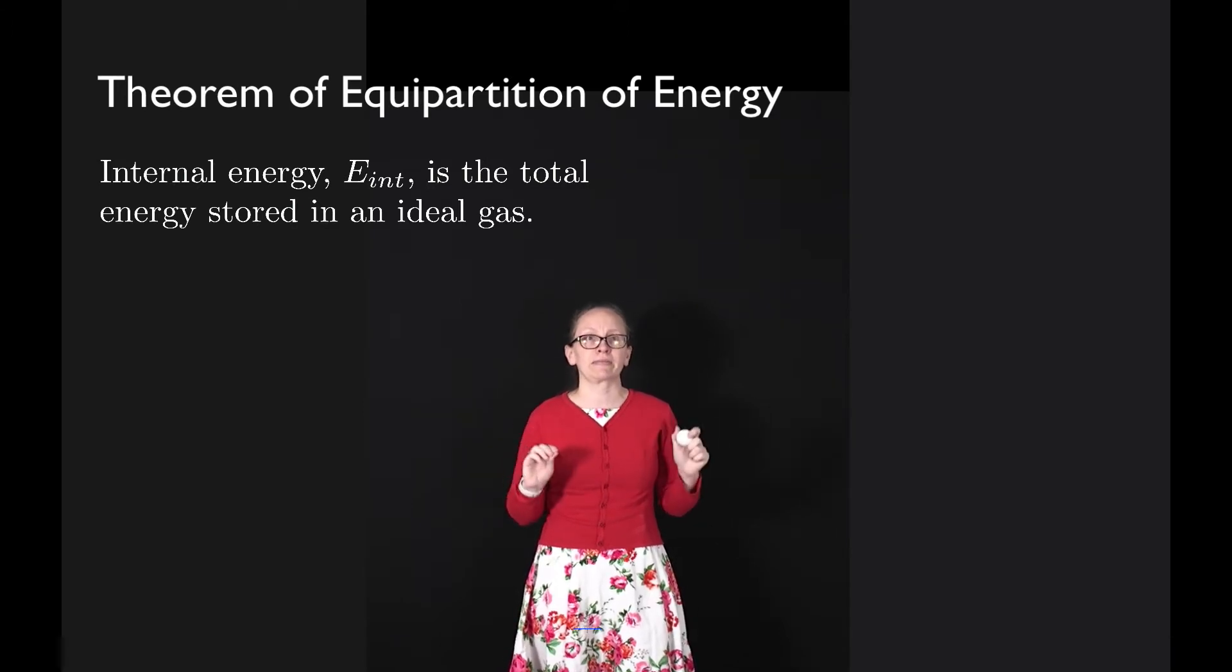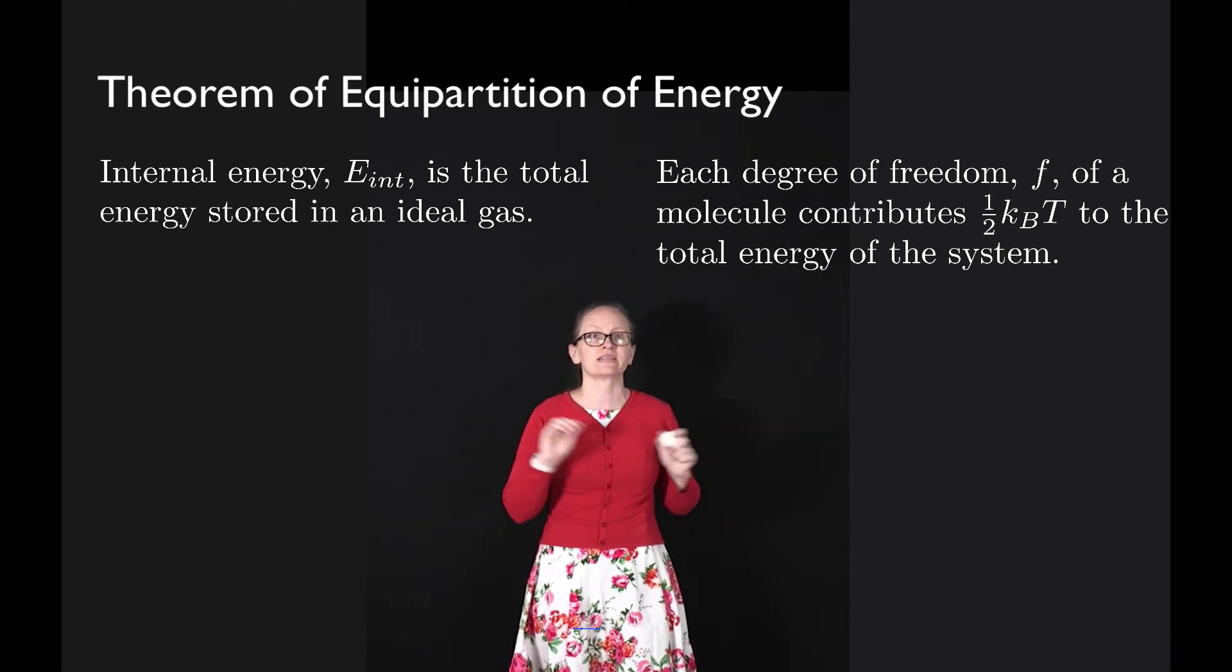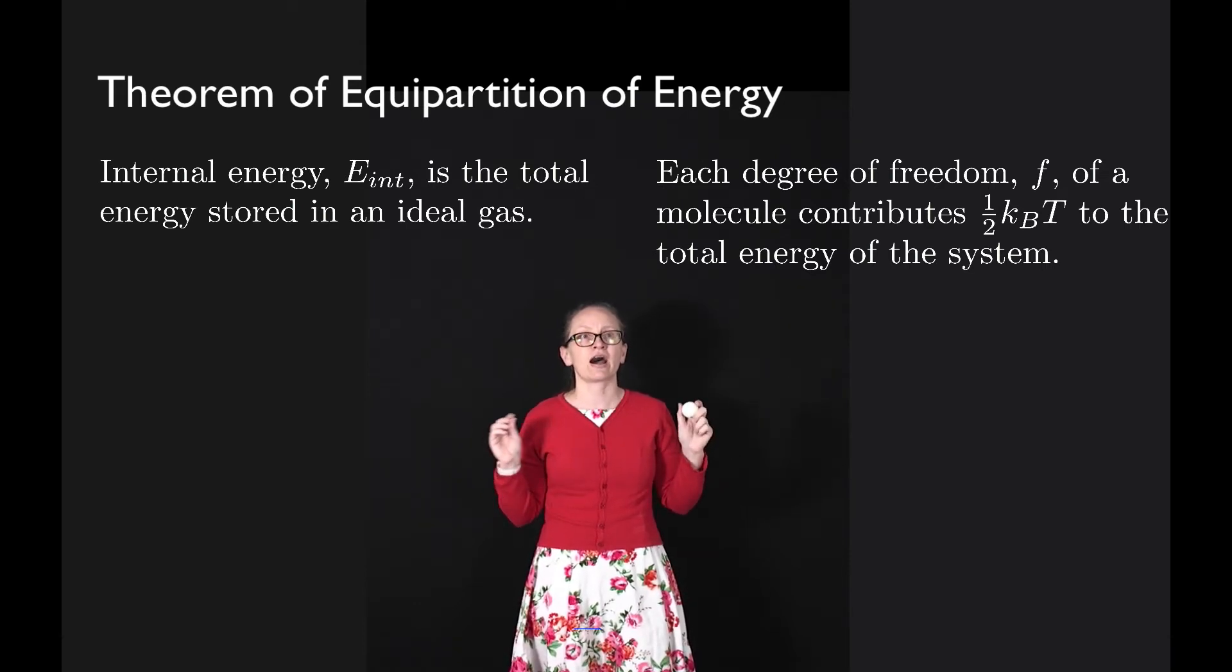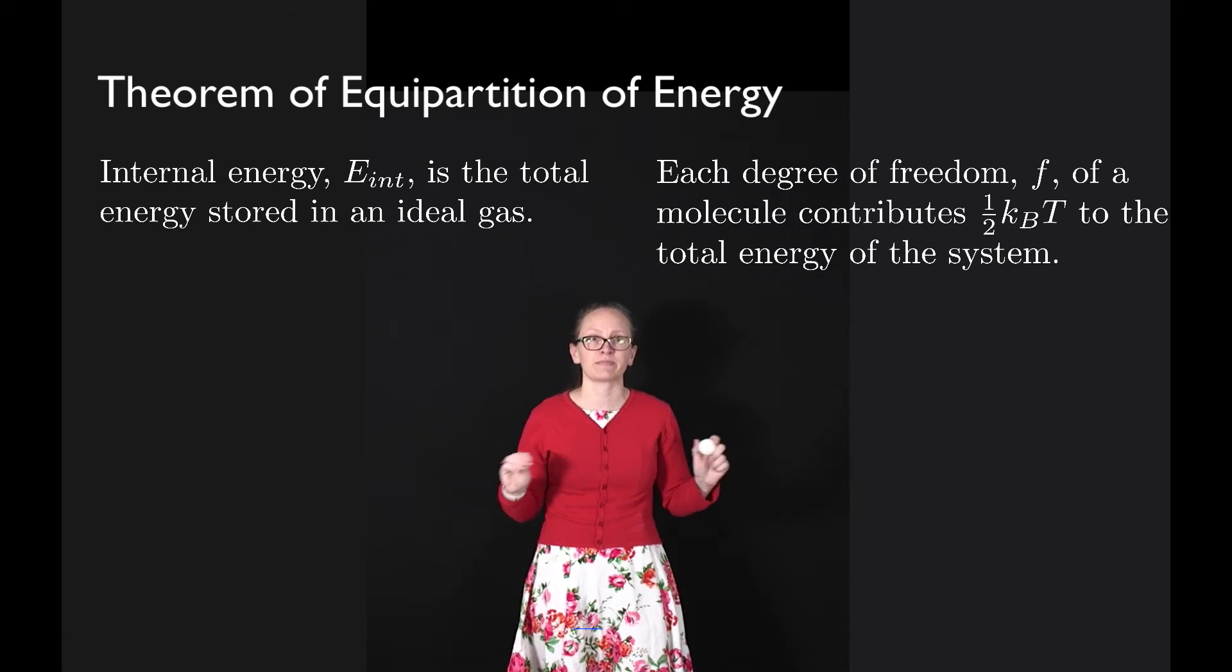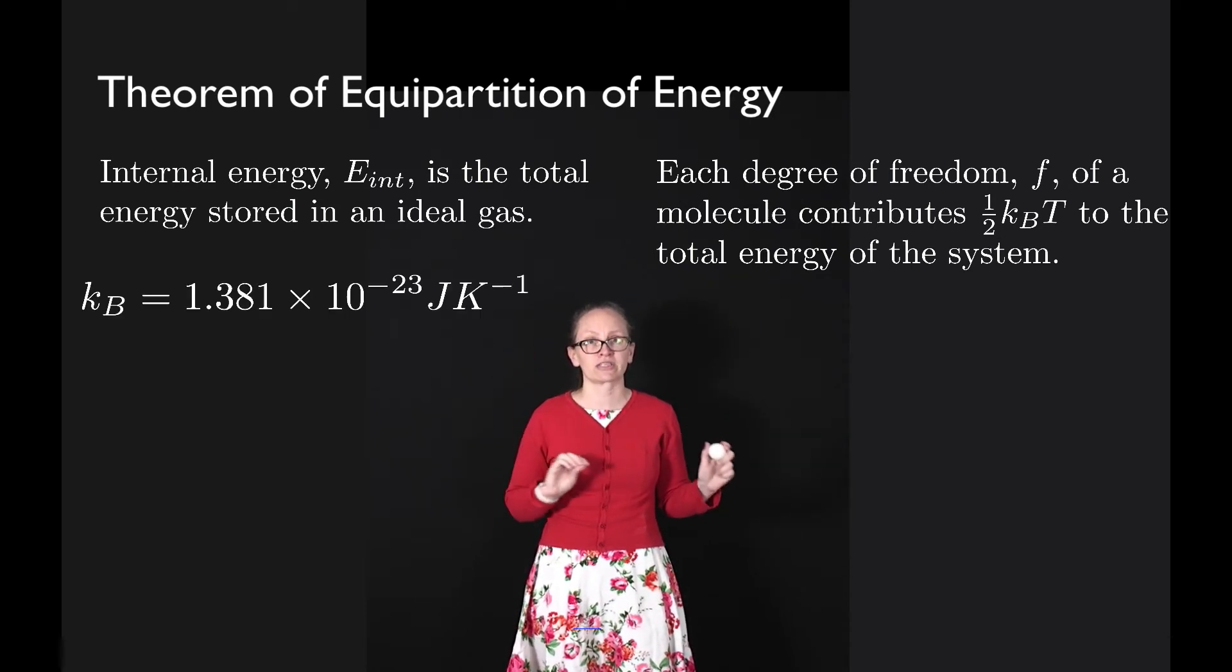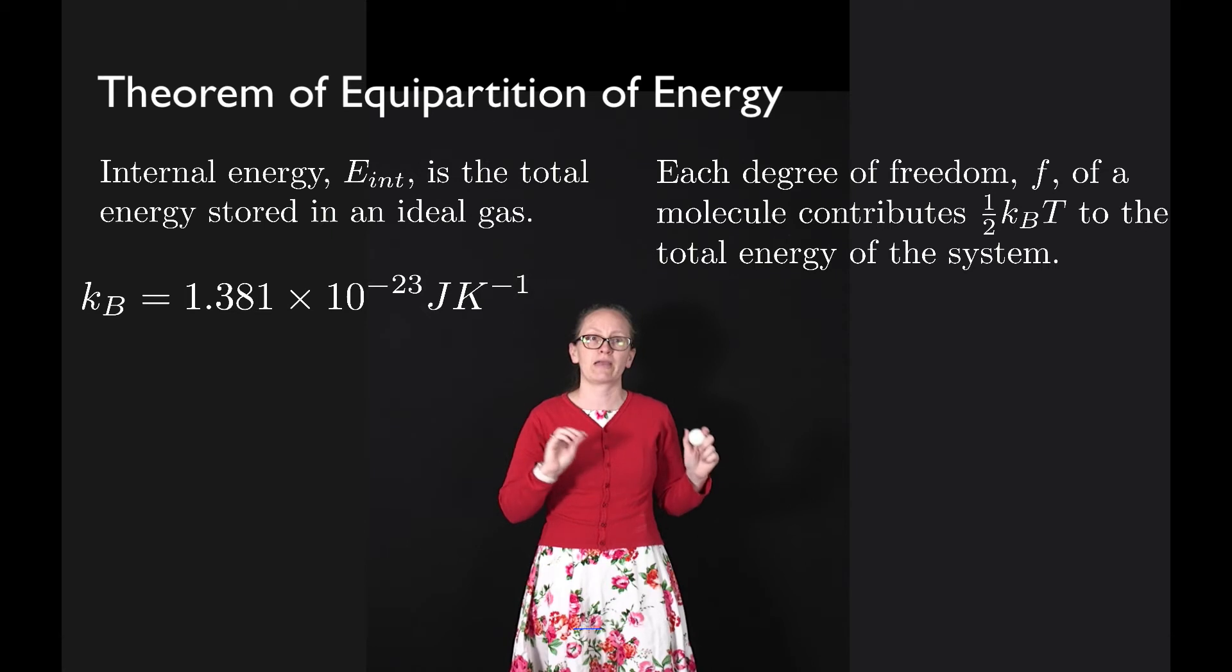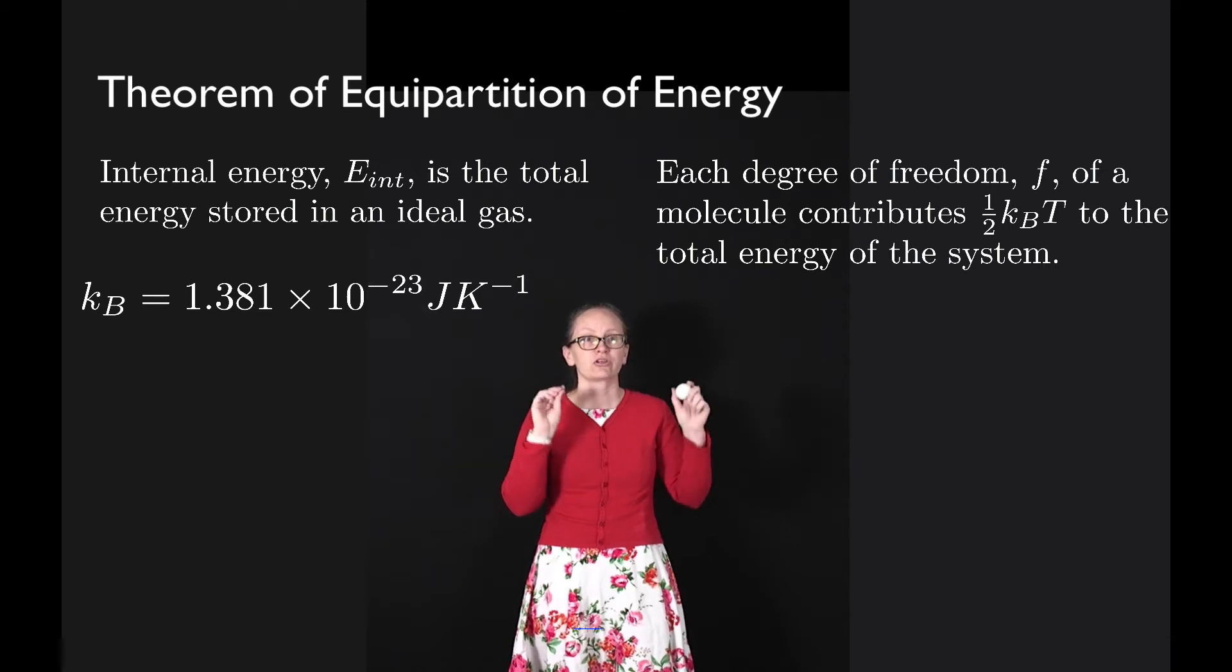What the theorem of equipartition of energy tells us is that each degree of freedom for a molecule contributes a half kBT to the total energy of a system. So kB here is Boltzmann's constant which is equal to 1.381 times 10 to the minus 23 joules per Kelvin.